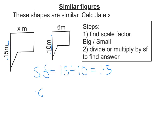Now I need to find what x is. x is in the biggest shape, so I'm going to multiply by the scale factor. I get its corresponding side, which is 6, and multiply by 1.5, which gives me 9 metres.